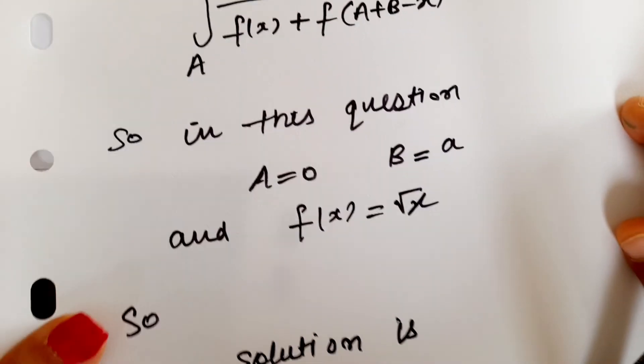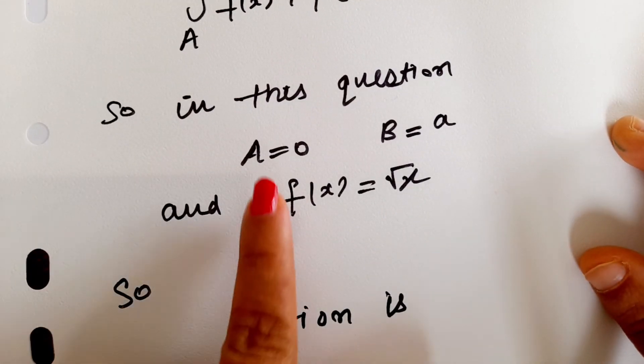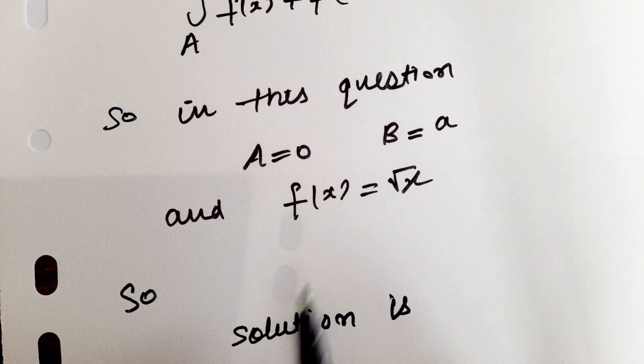So in this question, we have a equals 0, b equals a, and f of x is square root x. So what will the solution be?